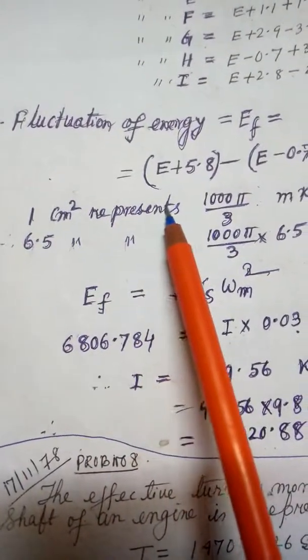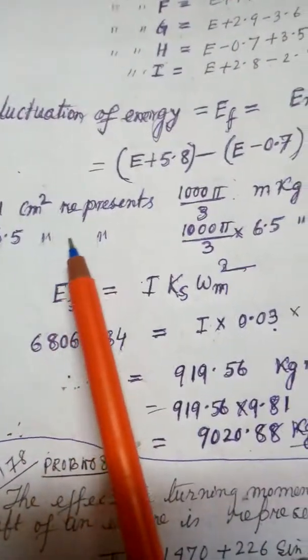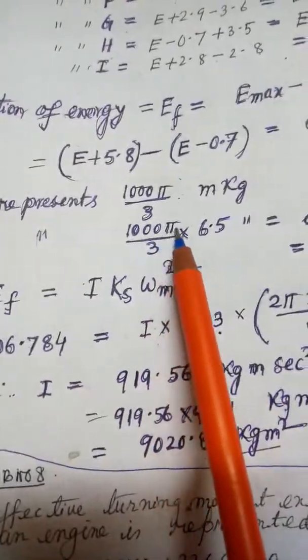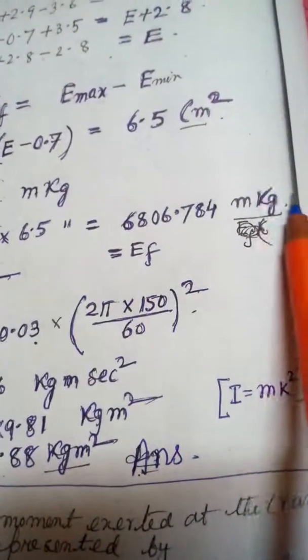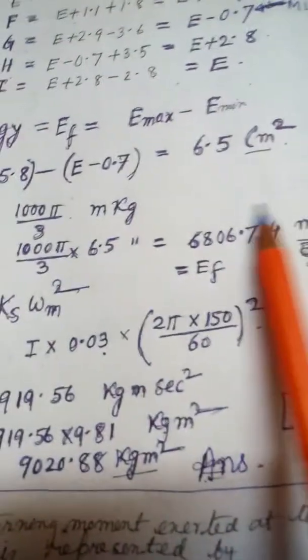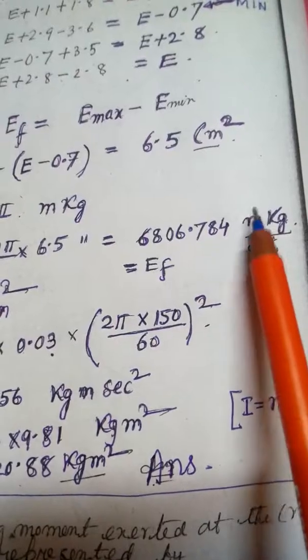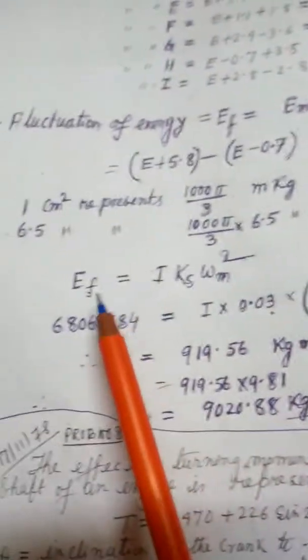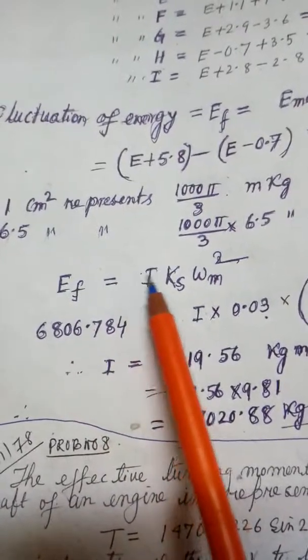Converting: 1 centimeter square represents 1000 pi by 3 kg meter. So 6.5 centimeter square represents 1000 pi by 3 times 6.5 kg meter. If you want, you can convert it to newton meter by multiplying by 9.81. Now the formula: Kf equals I times Ks times omega mean squared.